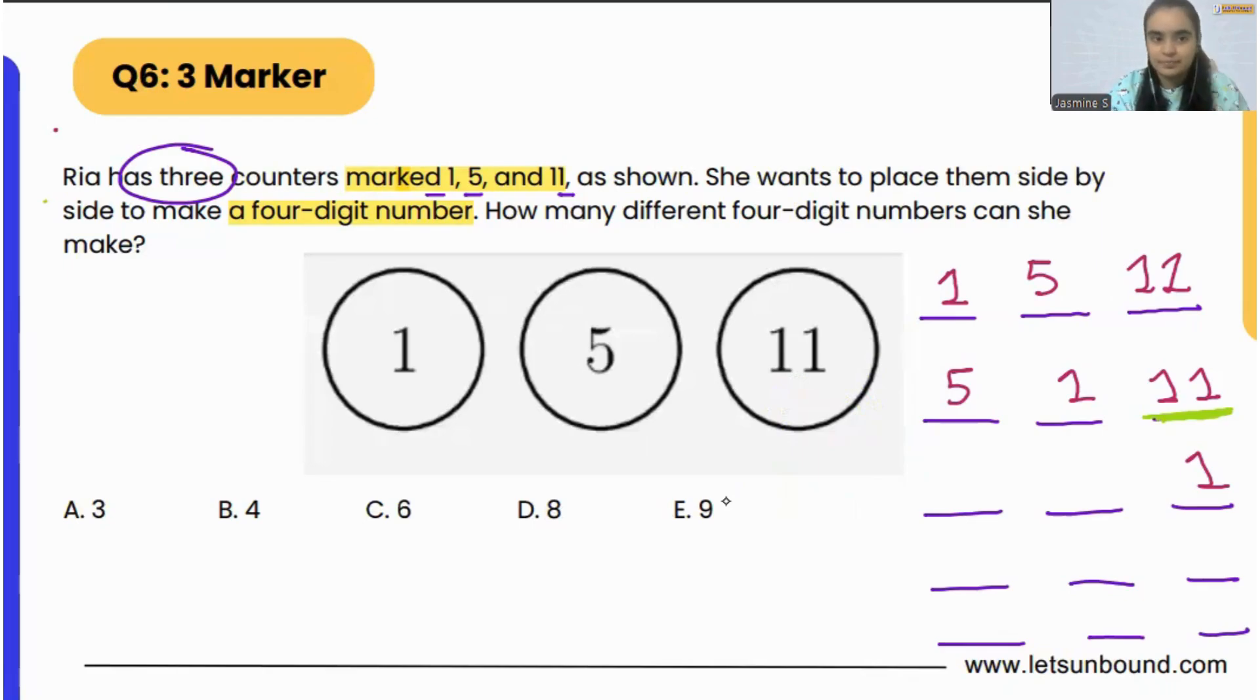Now what we can do is maybe put 5 here and then 11 over here. So this is our third number.